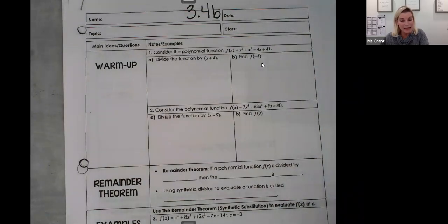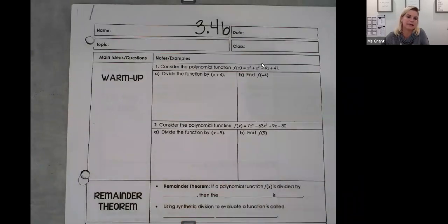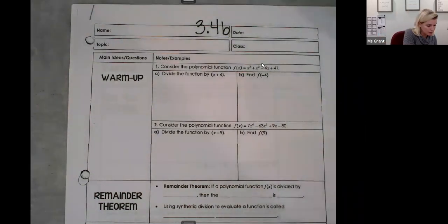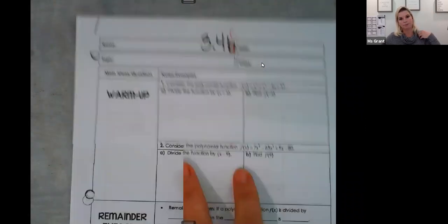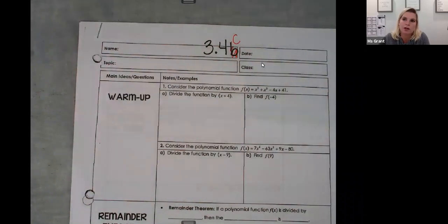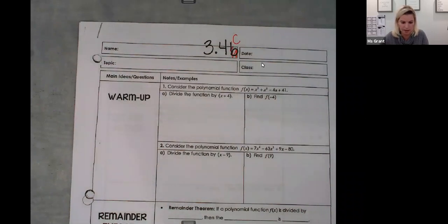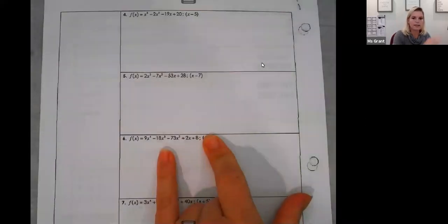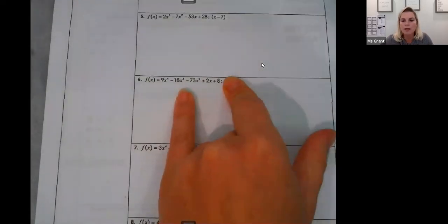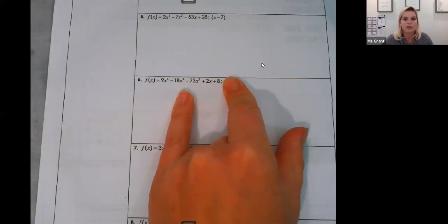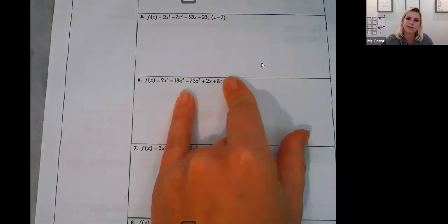We are on day three of 3.4 Dividing. We did long division day one, synthetic division day two. And now this should actually be like 3.4c, because we're going to use the remainders and the factors to actually work on a real polynomial that has a ton of terms. If I said factor that — it's to the fourth power and starts with a nine — that's hard. But today I'm going to teach you a technique to factor a large polynomial and know all the parentheses and the factors.